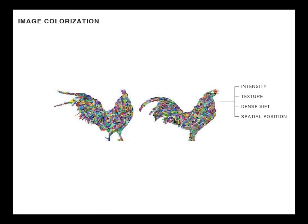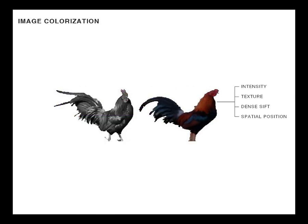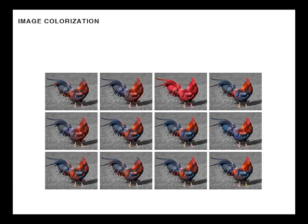The color transfer uses an energy minimization framework based on similarity of intensity, texture, dense SIFT features, and spatial position. The colorization results vary for different parameter settings of the colorization energy function.